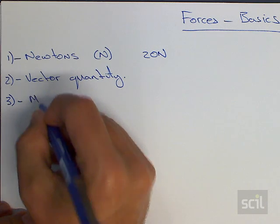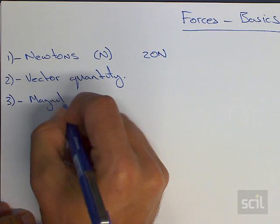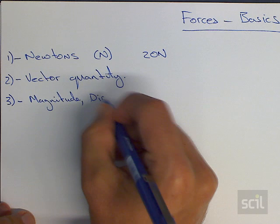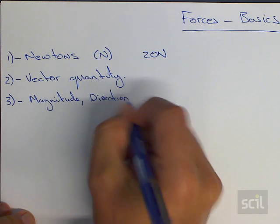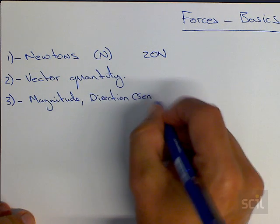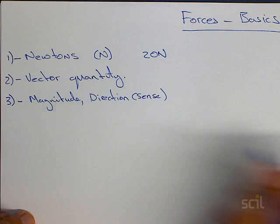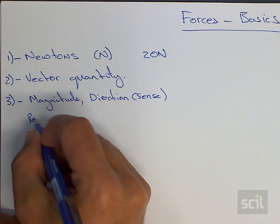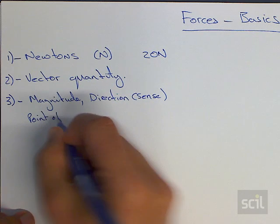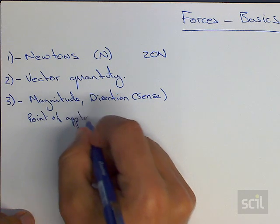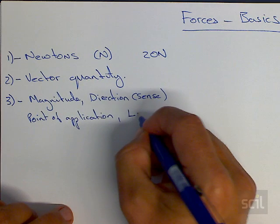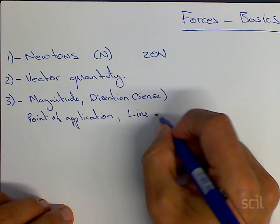These include the magnitude, the direction, or sense, which is what we call it in engineering. We also have a point of application, and, finally, a line of action.